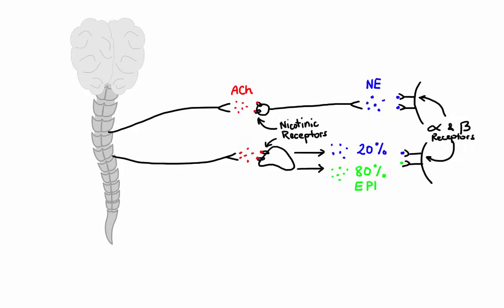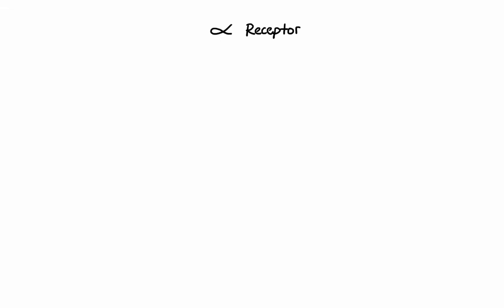Let's talk about these receptors in more detail, starting with alpha receptors. Alpha receptors can be divided into two main groups: alpha-1 and alpha-2. These can be further subdivided into alpha-1a, alpha-1b, alpha-1c, etc., but for simplicity, let's just focus on alpha-1 and alpha-2. Alpha-1 receptor is a Gq protein-coupled receptor, and as a rule of thumb, when activated, it causes a stimulatory response mediated by increase in intracellular calcium.